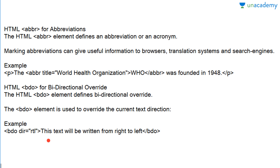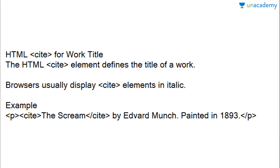Now let's read about the last tag: the cite tag. This is a work title tag. We have seen in some pictures displayed on websites that the name of the picture is written in a different format — this uses the cite tag. It is a type of italic tag. Example: &lt;p&gt;&lt;cite&gt;The Scream&lt;/cite&gt; by Edward Munch, painted in 1893.&lt;/p&gt;. When you read this in your browser, you will see the painting name displayed in italic format.